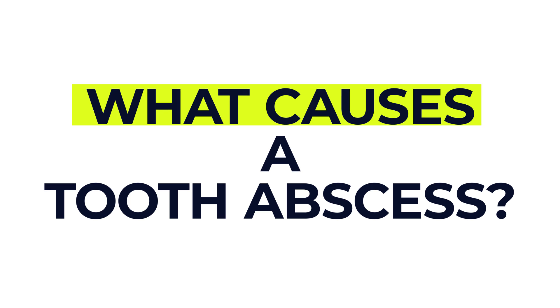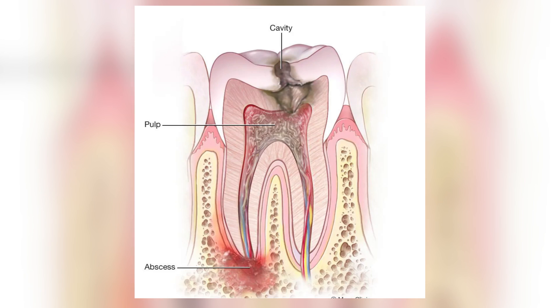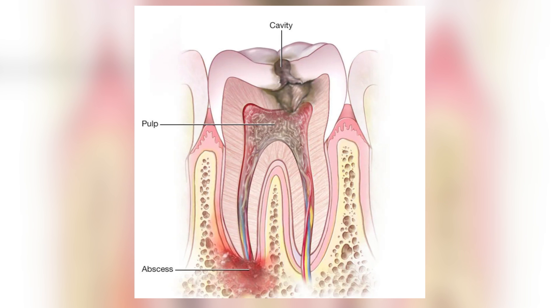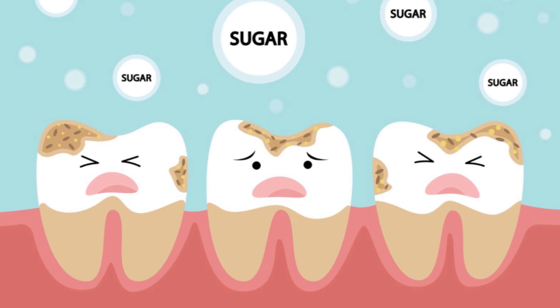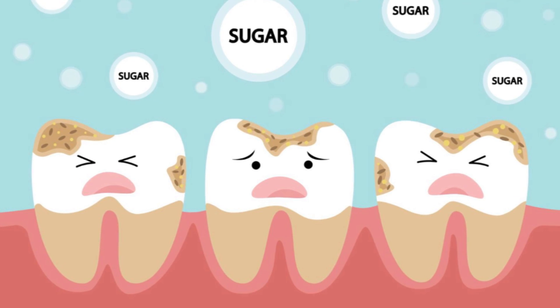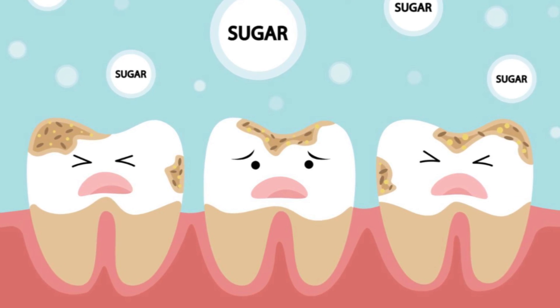What causes a tooth abscess? Anything that creates an opening for bacteria to get into your tooth or the surrounding tissues can lead to a tooth abscess forming. For example, you might have a decaying tooth, medically known as a cavity. This is where the hard surface of your tooth starts to decay, and this occurs when bacteria break down sugars in food and drink, creating acid that attacks the enamel. Bacteria could also get in through broken, chipped, or cracked teeth, or through your gums.